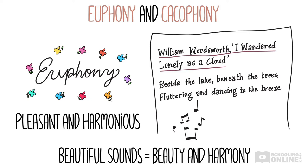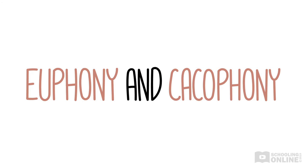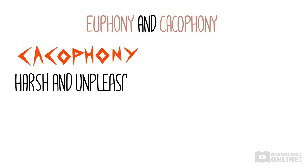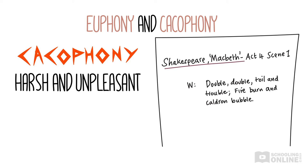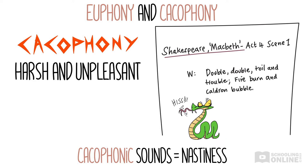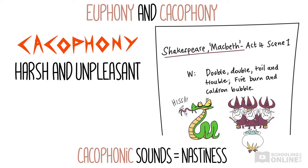In this example, Wordsworth's euphony helps convey the splendour of the flowers that he's looking at. The opposite of euphony is cacophony, which is when words sound harsh and unpleasant. Shakespeare gives a great example in Macbeth, when the witches chant: 'Double, double, toil and trouble, fire burn and cauldron bubble.' See how the words seem to hiss and spit?